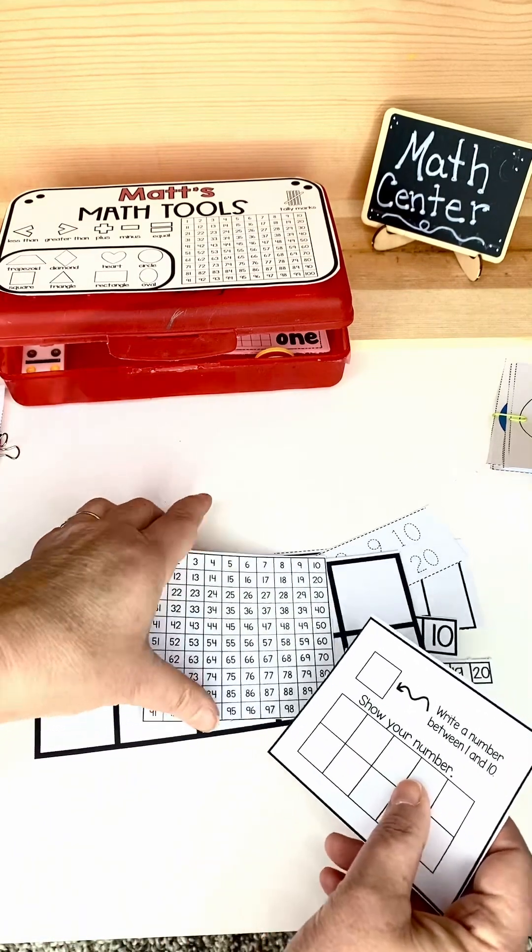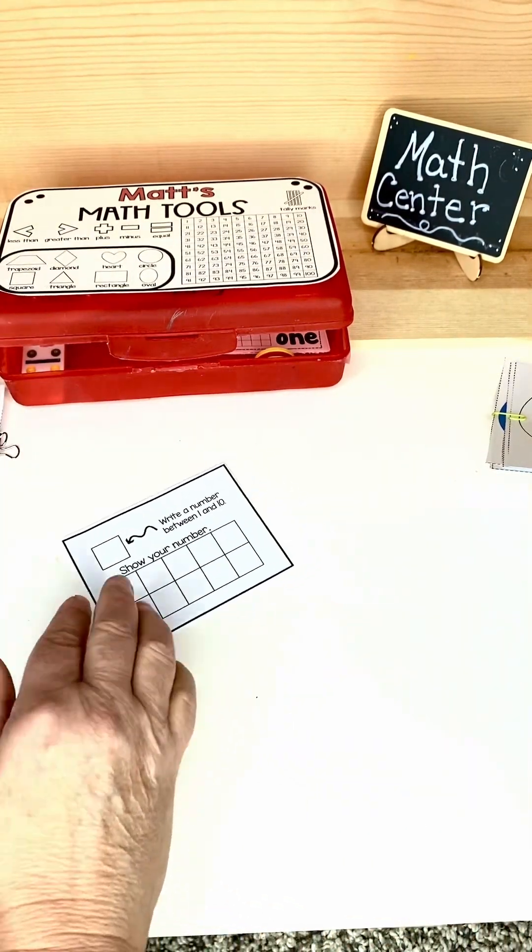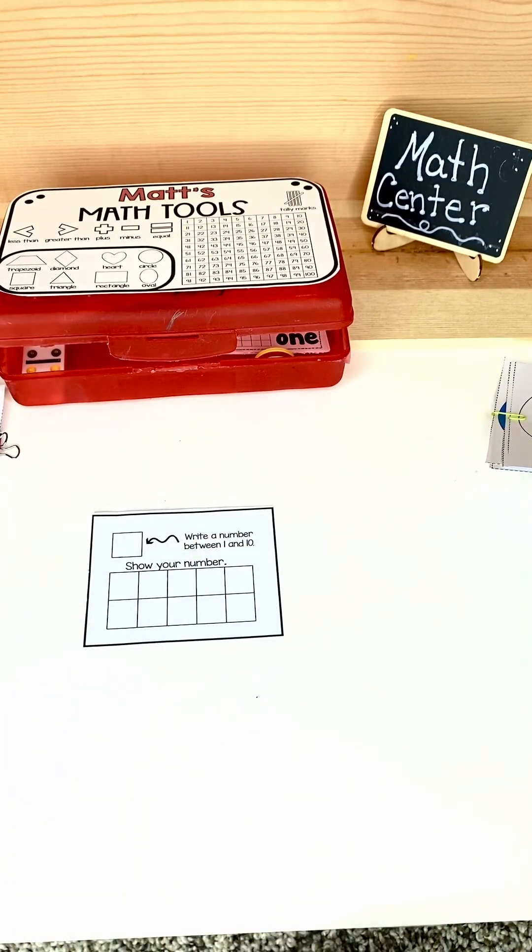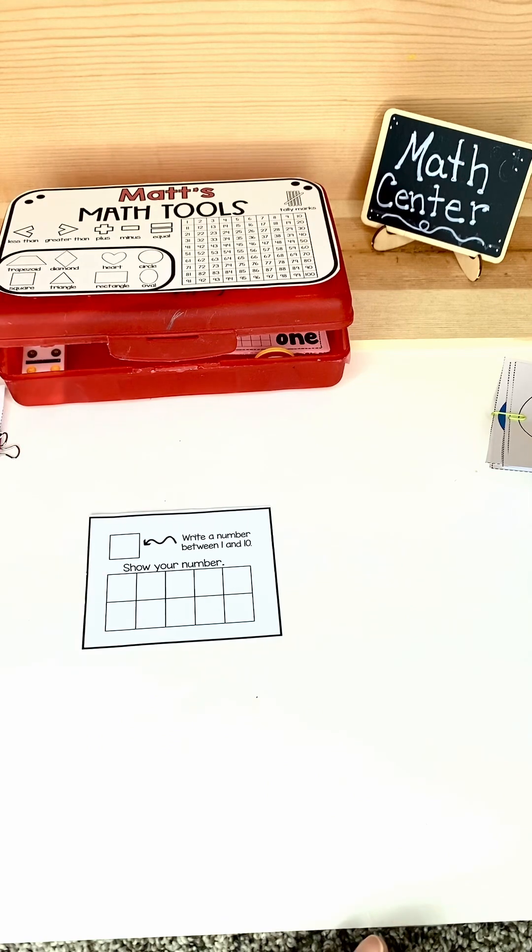This is fun. This is where the students will put a number between 1 and 10. Say they put 9, then they would show 9 on the 10 frame.